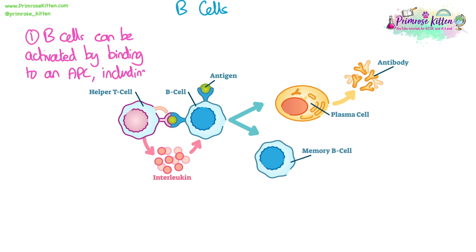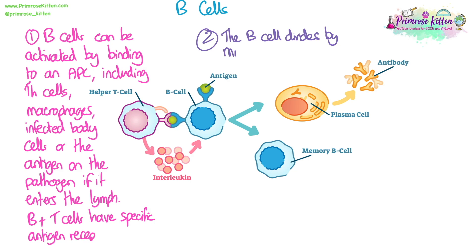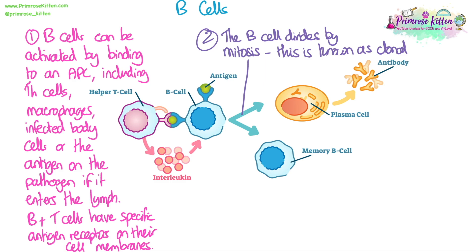B cells can be activated in multiple ways: by binding to an antigen presenting cell such as a T helper cell, a macrophage, or an infected cell, or by directly encountering the antigen on the pathogen itself. This can occur when the pathogen enters the lymph, where B and T cells have specific antigen receptors on their membrane. The point of binding to the antigen via that specific receptor is known as clonal selection; the B cell is then selected and undergoes clonal expansion, dividing by mitosis to make many clones, followed by differentiation.